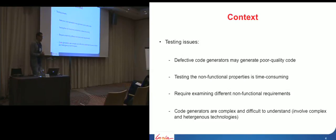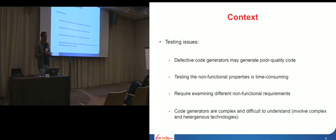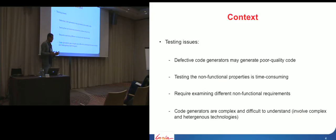Testing code generators may raise different issues. For example, defective code generators may generate poor quality code that affects system performance and reliability. On the other hand, testing the non-functional properties of code generators is very time-consuming, because each time we test a code generator we have to generate code and use different platform-specific profilers to get the non-functional properties. Another issue is that we have to examine different non-functional properties such as execution time, memory usage, and so on. Code generators are also known to be very complex and difficult to understand, involving different technologies, transformation rules, and numerous dependencies.